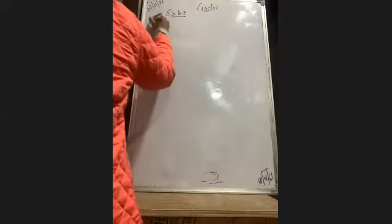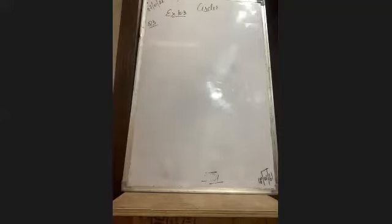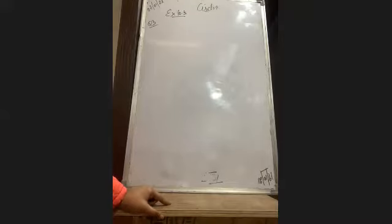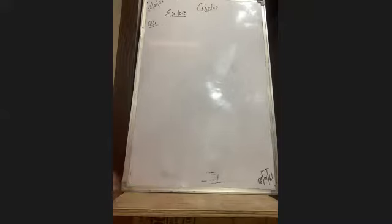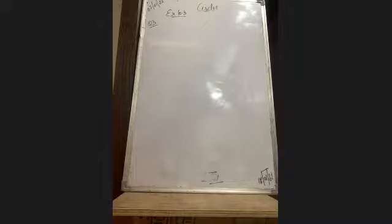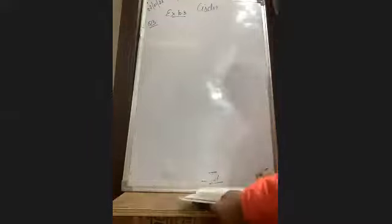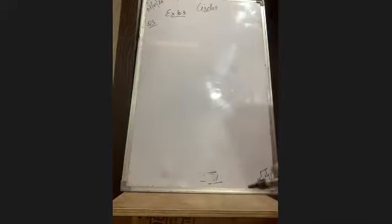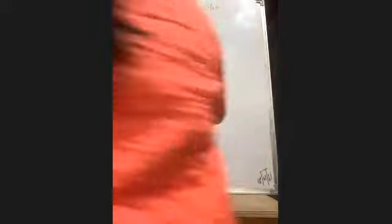Now we come to question number 3. Exercise 10.3, question number 3: if two circles intersect at two points, prove that their centers lie on the perpendicular bisector of the common chord. This is an important question. Now what is the question — two circles intersect at two points, so I am going to make the figure.